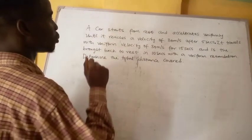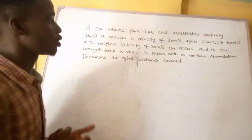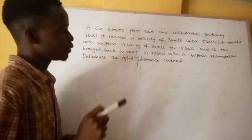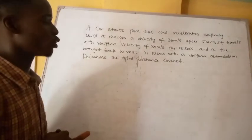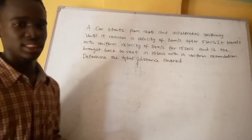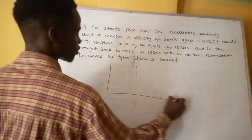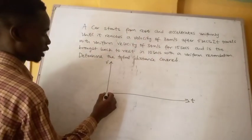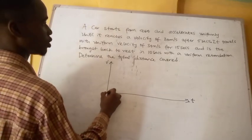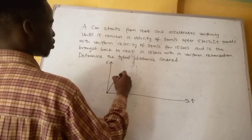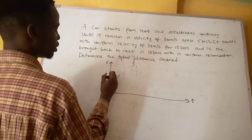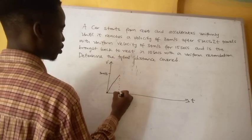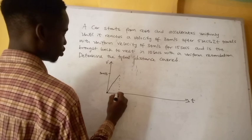We have another question: a car starts from rest and accelerates uniformly until it reaches a velocity of 30 meters per second after 5 seconds. It then travels with uniform velocity for 15 seconds and is brought back to rest in 10 seconds with uniform retardation. Determine the total distance covered. Representing this on a velocity-time graph: velocity starts at zero, rises to 30 m/s over 5 seconds.